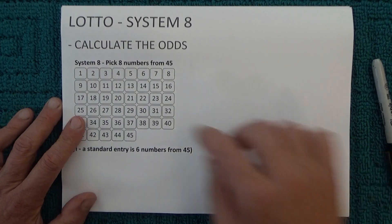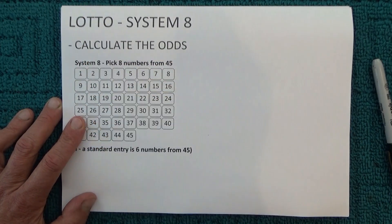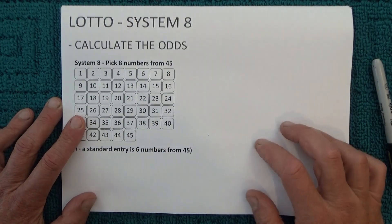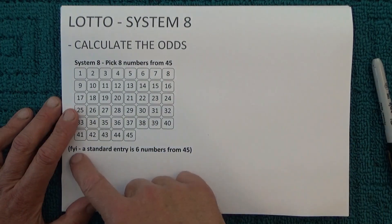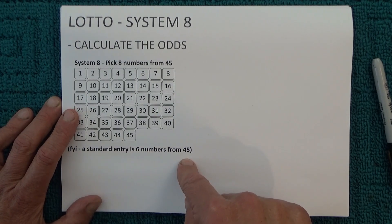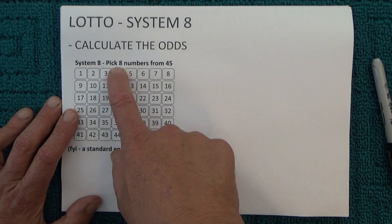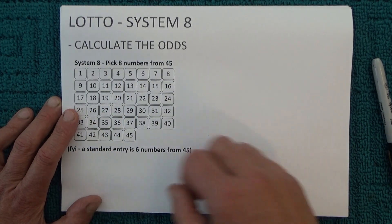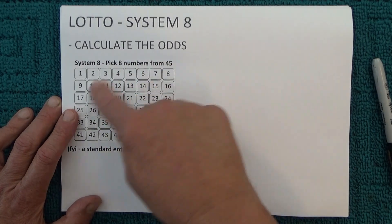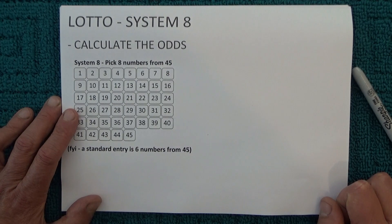Hello, today I'm going to show you how to calculate the odds of winning Lotto — winning first prize in Lotto with a System 8 entry. Now in Australian Lotto, a standard entry is six numbers from 45. So with System 8 you actually get eight numbers from 45. You've actually got two extra numbers in each of your coupons with a System 8 entry.